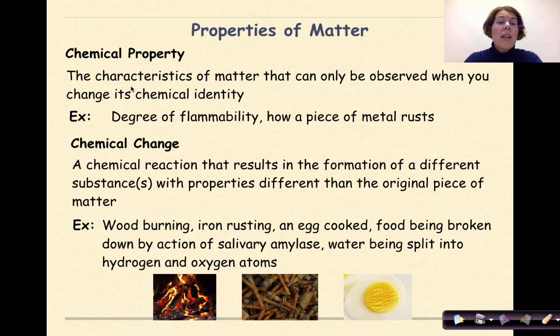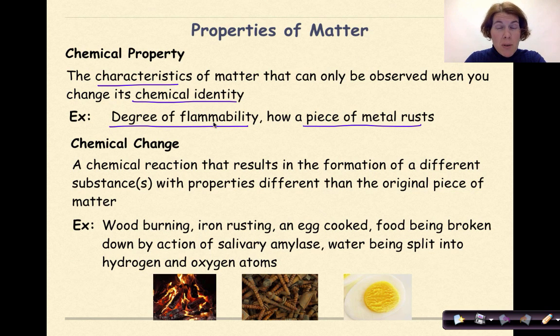A chemical property is defined as the characteristics of matter that can only be observed when you change its chemical identity. So for example, how flammable something is, or how a piece of metal rusts.